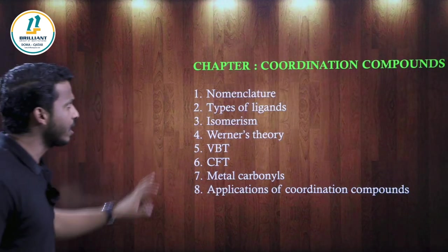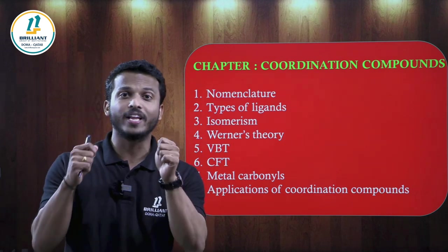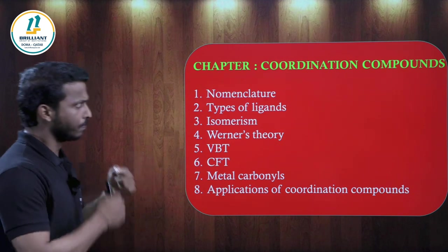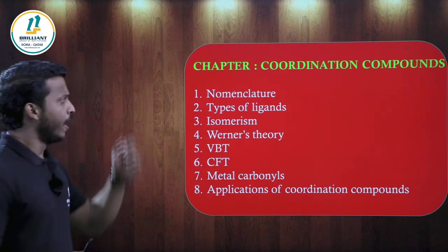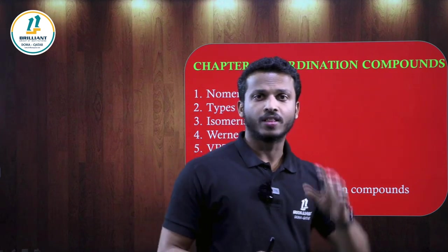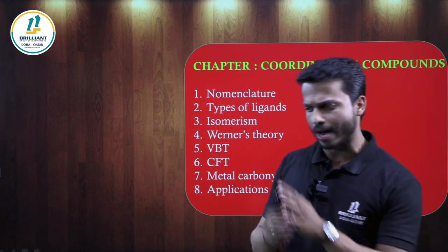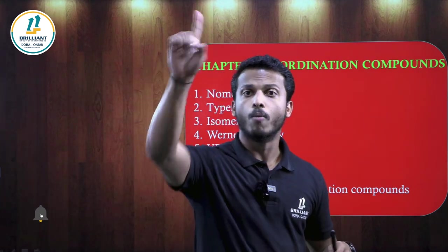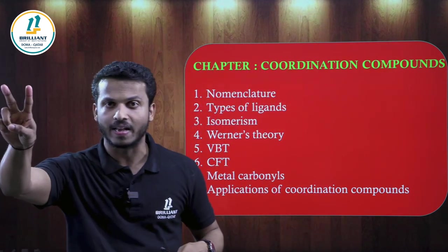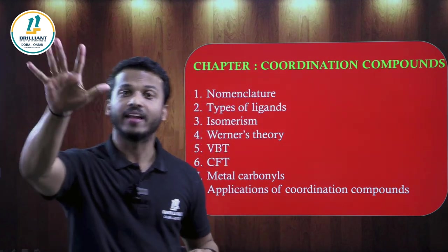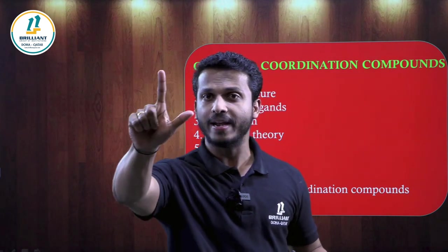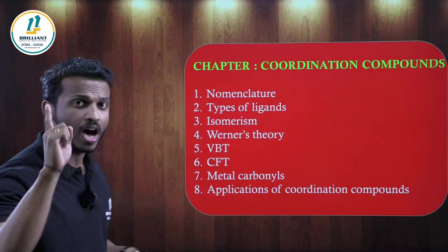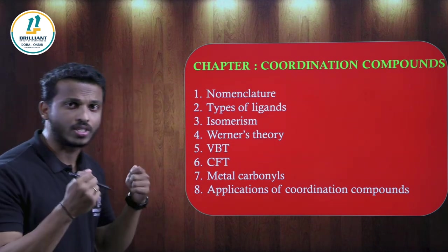Next is a very interesting and important chapter: Coordination Compounds. You can expect a question from IUPAC nomenclature. We have studied types of ligands: monodentate, bidentate, polydentate, ambidentate, and chelating ligands. Ambidentate and chelating ligand definitions — study their examples. Their charges must be remembered to calculate the oxidation state of the central metal.